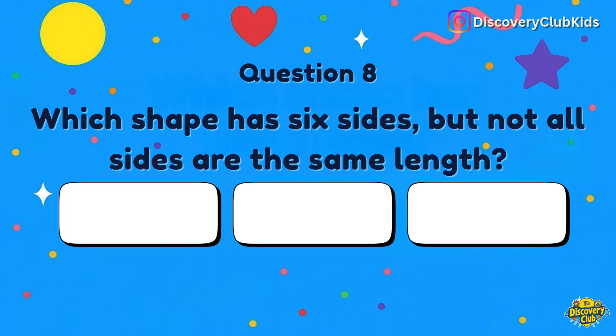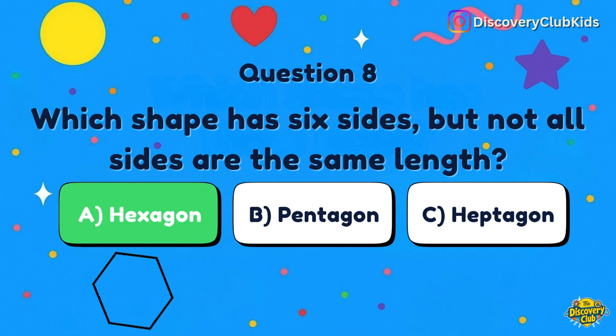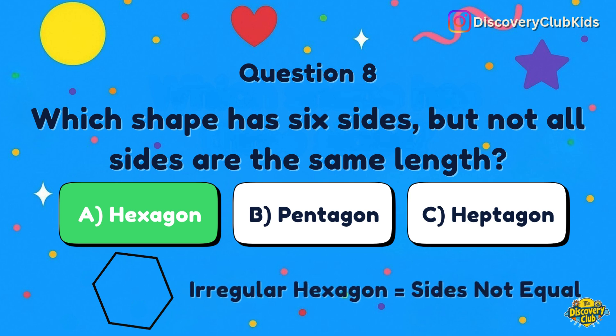Next question: Which shape has six sides but not all sides are the same length? Your options are hexagon, pentagon, or heptagon. Did you guess it? Yes, it's hexagon — but this one is called an irregular hexagon, because its sides are not equal.